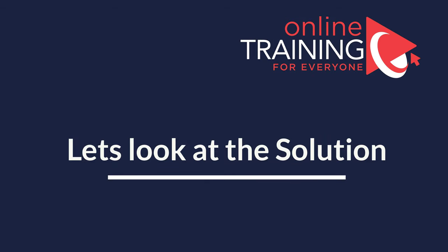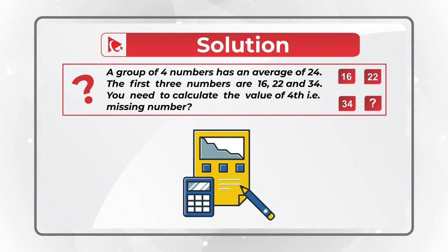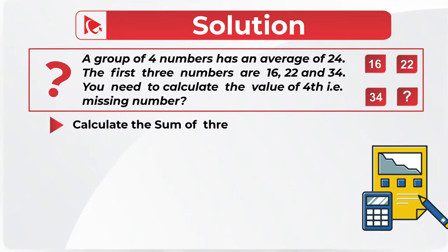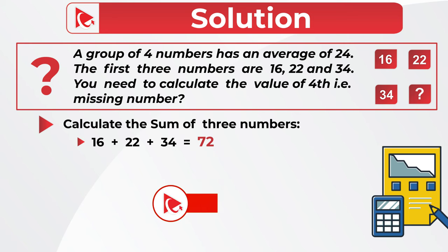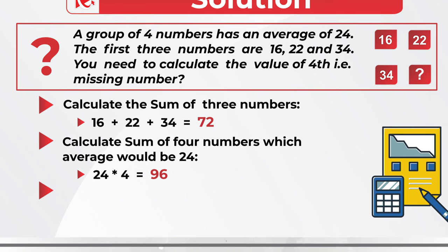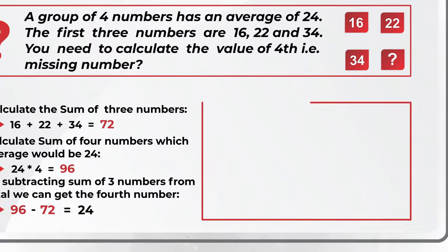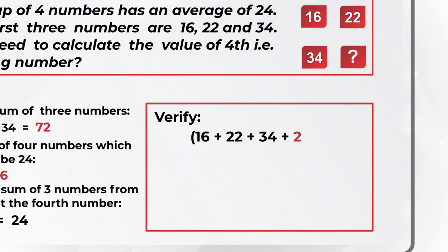Let's move forward to the correct solution. In the first step, we calculate the sum of the three existing numbers: 16 plus 22 plus 34 equals 72. In the next step, we determine the sum of four numbers whose average would be 24: multiply 24 by 4, which equals 96. In the last step, subtract the sum of three numbers from 96: 96 minus 72 equals 24. Let's verify: (16 plus 24 plus 34 plus 24) divided by 4 equals 96 divided by 4, equals 24.